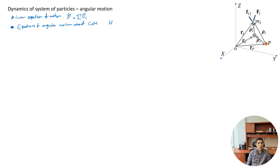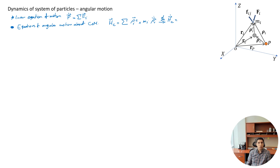In the previous lecture, we saw the angular momentum about center of mass is the summation of relative positions of all particles relative to center of mass, cross the relative velocity. What I can do is take the derivative of this, and I have H-dot-c equals — since I have a cross product of two terms, it's going to be the derivative of one cross the second, plus the first cross the derivative of the second.